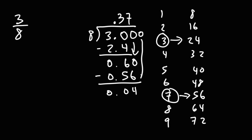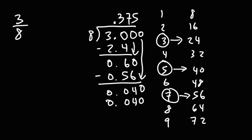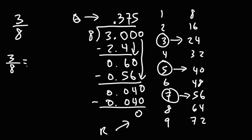Bring down another 0. 8 goes into 40 exactly 5 times. 8 times 0.005 is 0.040. Now that we have a remainder of 0, the quotient gives us the answer. So 3 over 8 as a fraction is equal to 0.375 as a decimal.